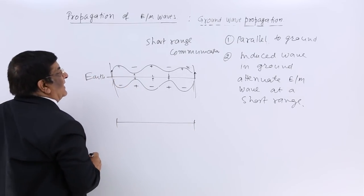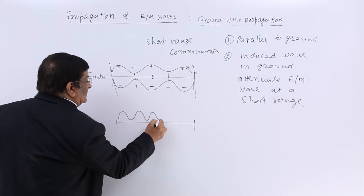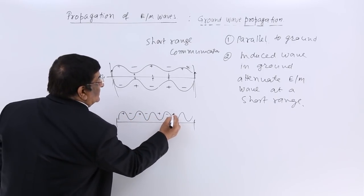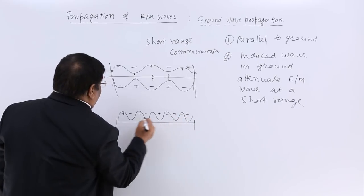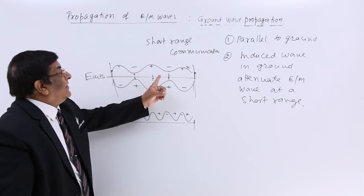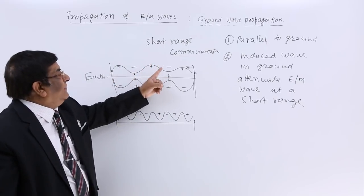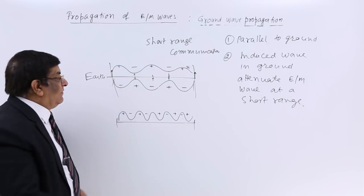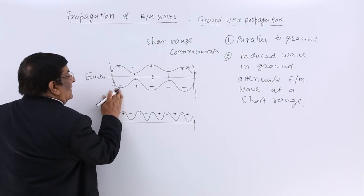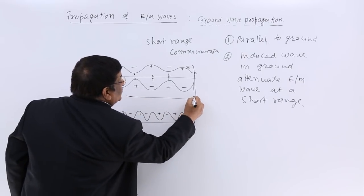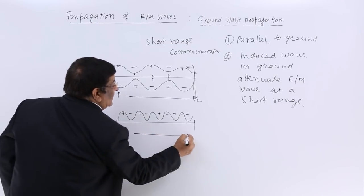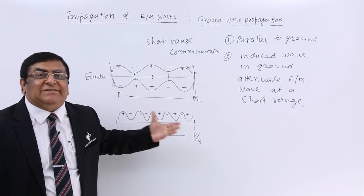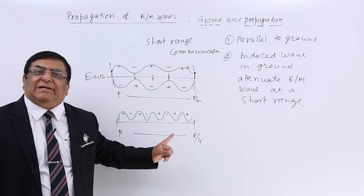If a higher frequency is used, there are 10 chances of short circuiting over the same distance. With more short circuiting events, the power reduces much faster — if the power was P at the start, it reduces to P/2, then P/4. Higher frequency attenuates faster. Therefore, we must use low frequency for ground wave propagation.